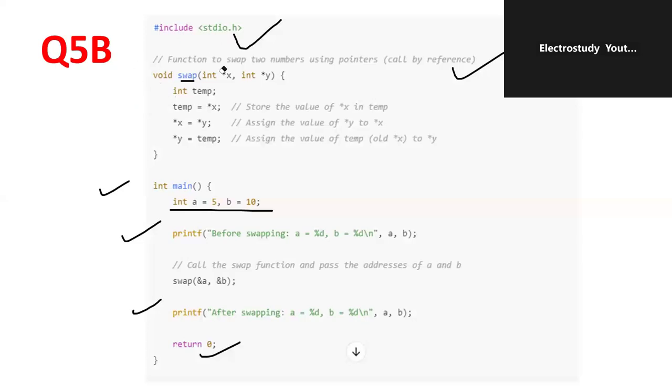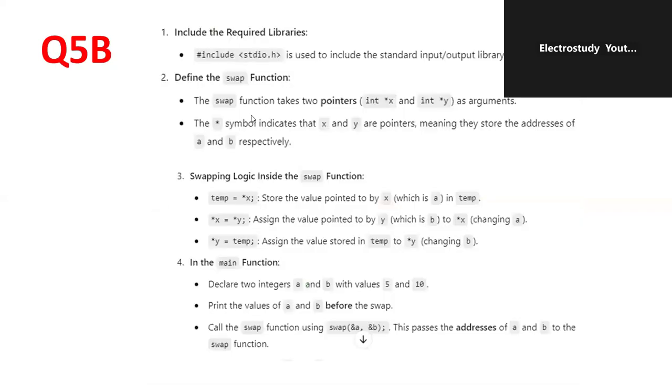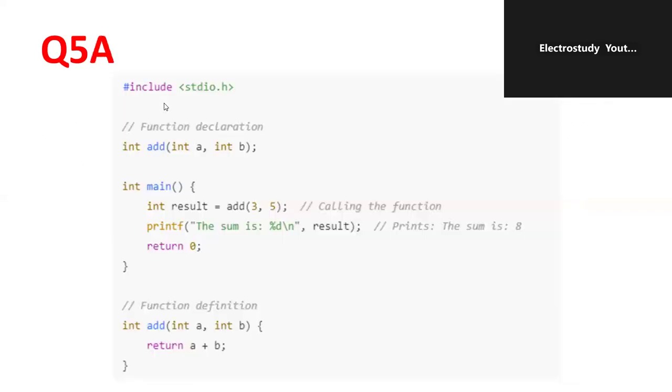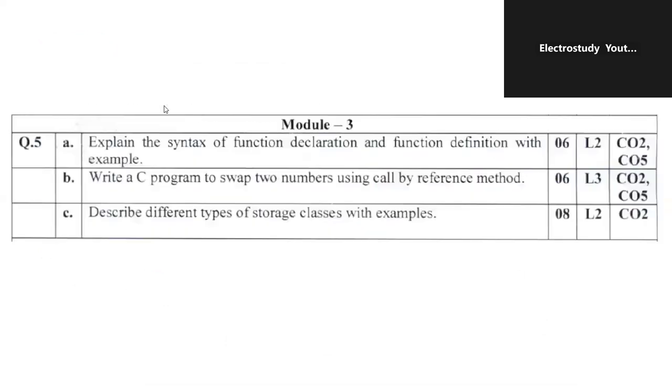If you write this program, you are able to get the swapping of numbers. Instead of 5, 10, you will be getting 10, 5. You can verify the output as well by using the proper C compiler, if you have. Question number 5b. I think it's clear to everybody.